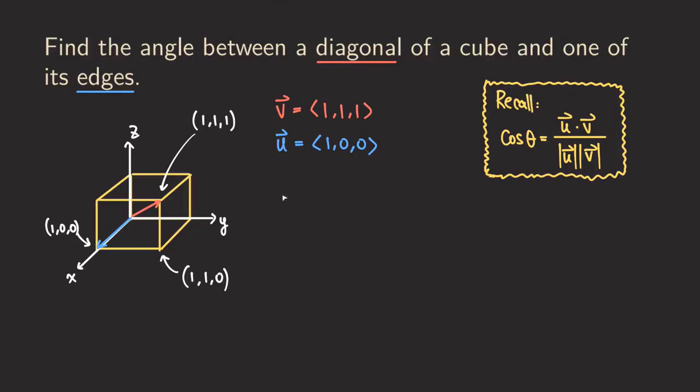We can actually find the angle between them using this formula right here. And so now what happens is that we have the cosine of theta, which is equal to U dot V. So we take the dot product of them. So we are going to get one, zero, zero, dotted with the vector one, one, one.